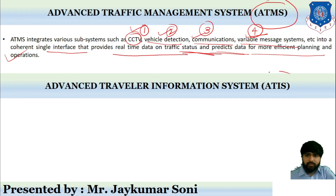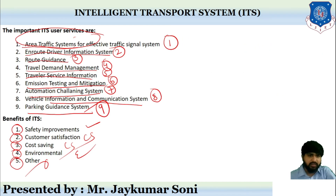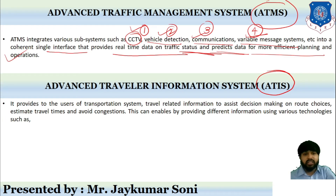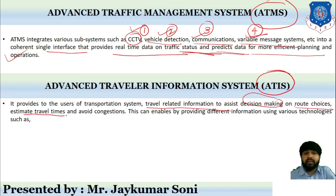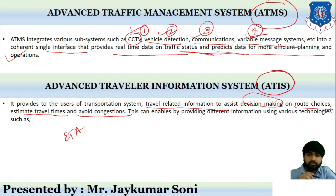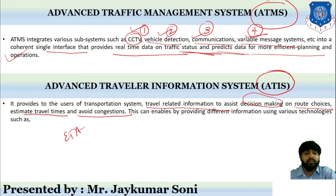The Advanced Traveler Information System, ATIS, is also one of the parts — it relates to Traveler Service Information. This system provides users of the transportation system with travel-related information so that they can make decisions: what route they should choose, what the estimated travel time (ETA) will be, and how they can avoid congestion. Just like Google GPS tells us the estimated time of arrival and compares routes — for example, this route is four minutes slower, that one is five minutes faster.